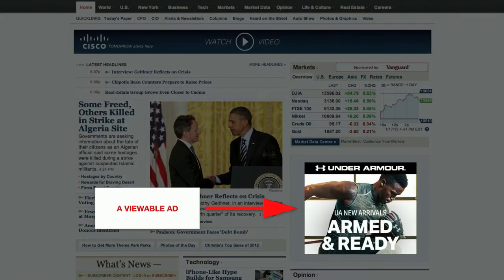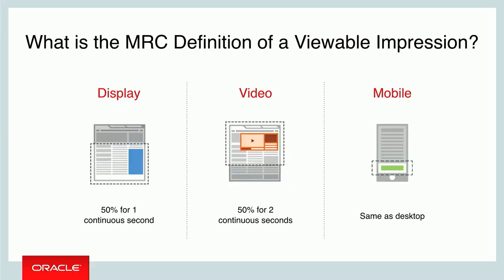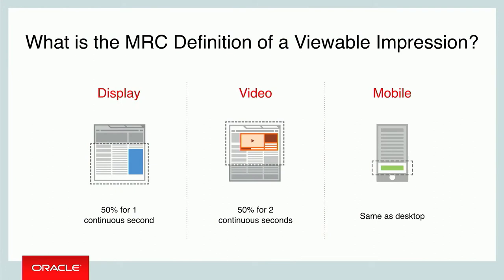A viewable ad is one that can be seen on the screen. Coming up with a formal definition took all the different parties in the industry to come together. The definition they came up with: for a display ad, 50% of the pixels need to be on the screen for a continuous one second. For a video ad, 50% of the pixels need to be on the screen for a continuous two seconds. It's a pretty low bar, and those standards are the same for both desktop and mobile.